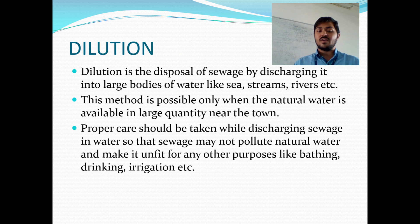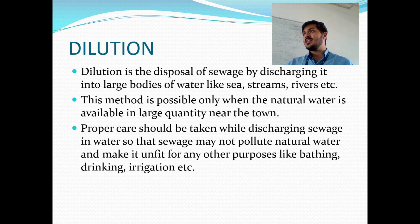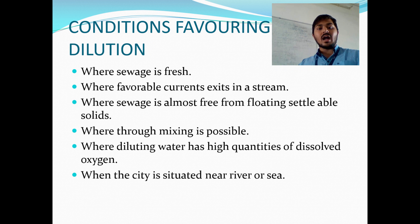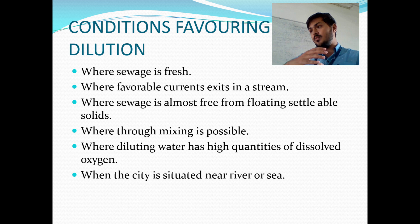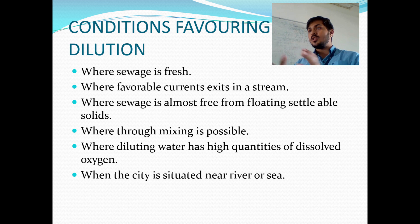Dilution is the disposal of sewage into large water bodies like sea, lakes and rivers. This method is possible only when natural water is located near a town or city. Proper care should be taken while discharging sewage into water bodies so it doesn't pollute them to the extent that they cannot be treated again for bathing, drinking or irrigation. The conditions favouring dilution are: the sewage should be fresh; there should be favourable current streams; and the sewage should be almost free of floating particles, as they block sunlight and oxygen exchange. The city should be situated near a river or sea so it is easily transported.